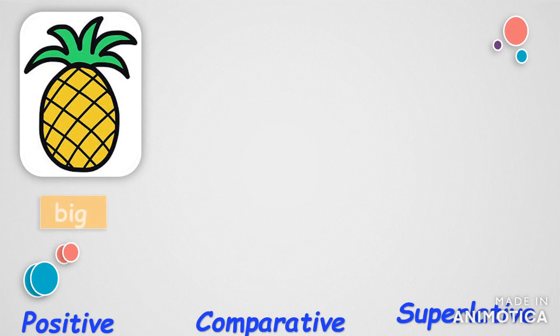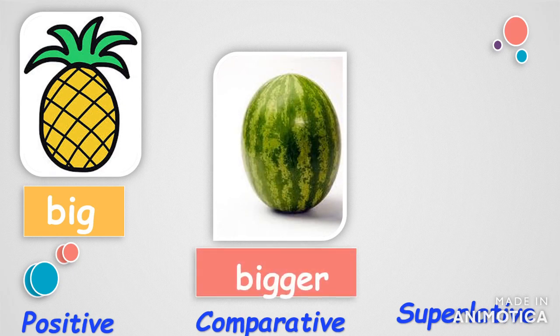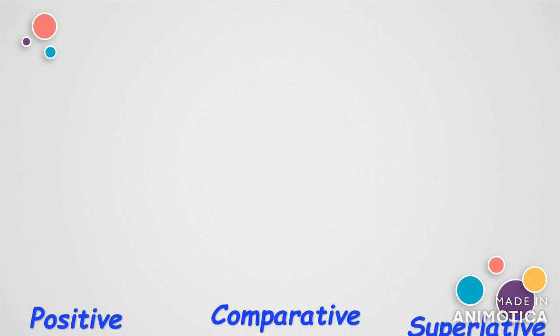Big, bigger, biggest. There are certain adjectives where, when we change them, we have to double the last letter. When we change the adjective 'big' into 'bigger' and 'biggest', we see the double 'g'. Here is one more example of the same type.